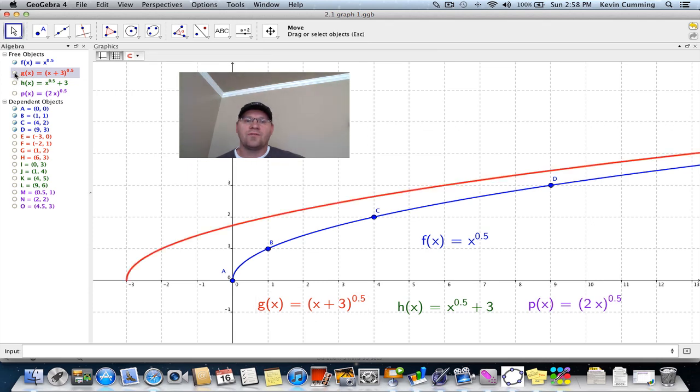And there's our red graph. Every point has been moved 3 units to the left. Point A has been moved 3 units to the left, Point B moved 3 units to the left, Point C 3 units to the left, and Point D also 3 units to the left.